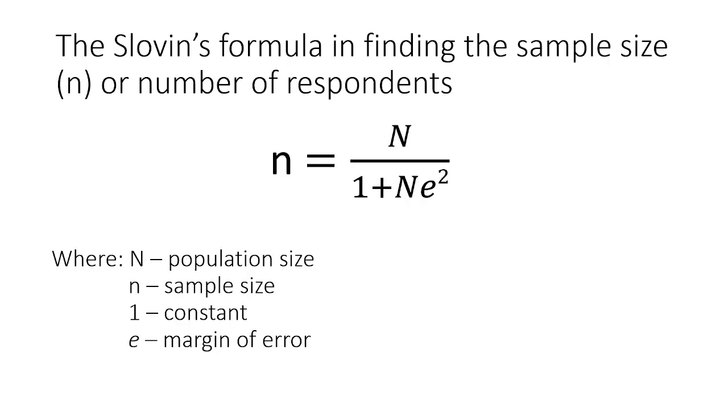We are going to use Slovin's formula in finding the sample size or the number of respondents. Small letter n, the sample size, equals N (the population size) divided by 1 (a constant) plus the product of the population and the square of the margin of error.